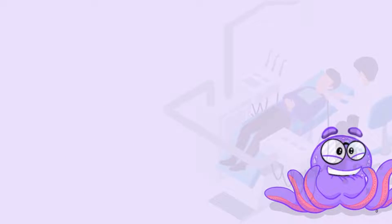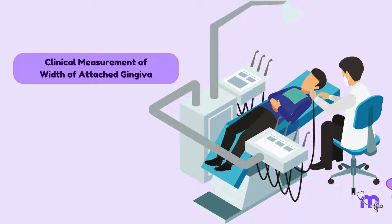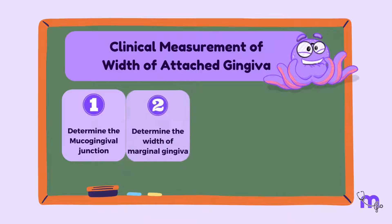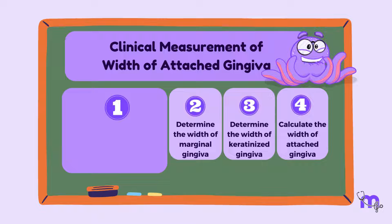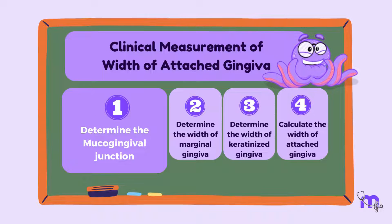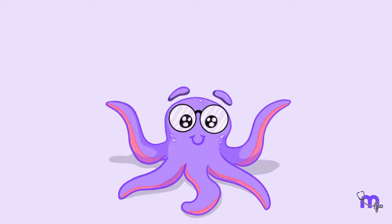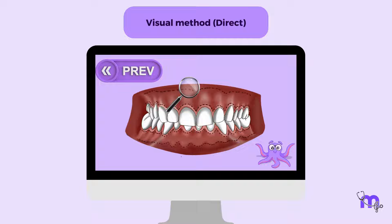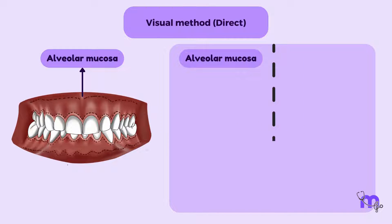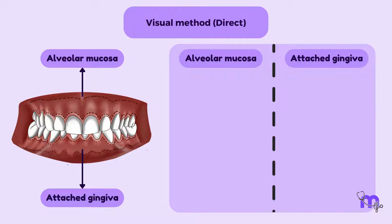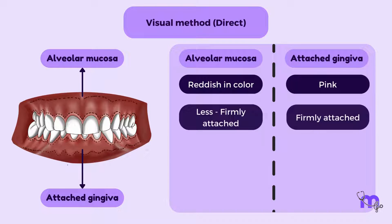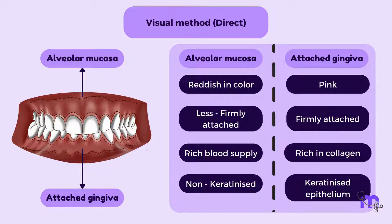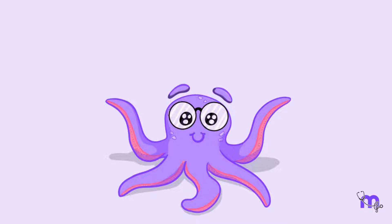Let us now learn how to clinically measure the width of the attached gingiva. This involves four steps. Step 1 is to determine the mucogingival junction. This can be done by the visual method, which can either be direct or by using a stain, and the functional method. If you recall our previous video, we learned how to differentiate alveolar mucosa and attached gingiva. Keeping these points in mind, we can locate the mucogingival junction. This is the direct visual method.